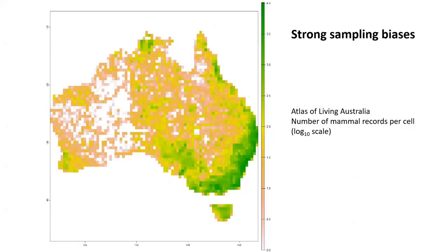This is where Richard comes in to talk about the second case study. The chytrid frog case study relied on using a lot of occurrence data to document changes in distribution and niche characteristics over time. What we'd like to do is extend this work into other taxa and use this approach globally to understand how niche and range characteristics are changing in declining species.